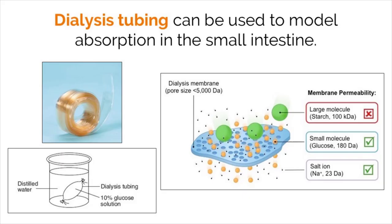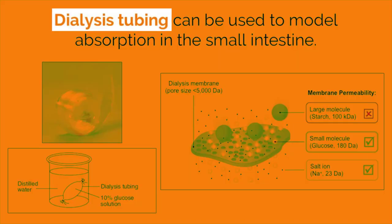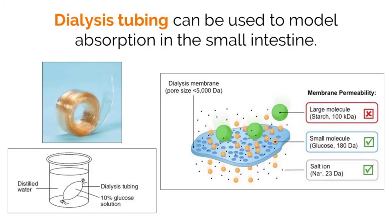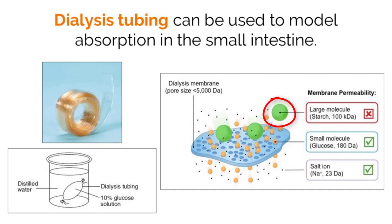To model how the small intestine absorbs material, scientists often use dialysis tubing. The tubing is designed with very tiny pores that only small molecules can pass through, just like the workings of the small intestine where only molecules of a certain size can get past the cell membrane. This is why our body goes through so much trouble secreting enzymes that break down molecules into small pieces or monomers. If we didn't, the molecules would be too large for the small intestine to take in, much like how large molecules cannot move across the layer of dialysis tubing.